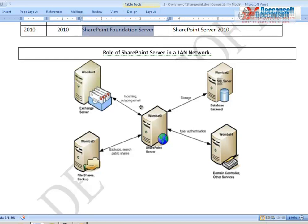In a LAN network, the centralized SharePoint server communicates with Microsoft Exchange Server for sending and receiving emails, with SQL Server for storing and retrieving data, with the domain controller where all usernames and passwords are stored for authentication, and with a file-sharing server for backups. Essentially, SharePoint sits at the center of many other Microsoft servers, coordinating activities between different Microsoft products.